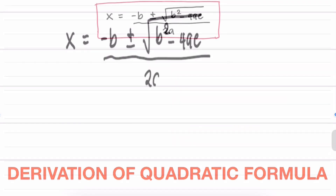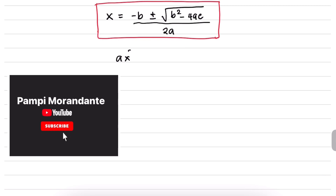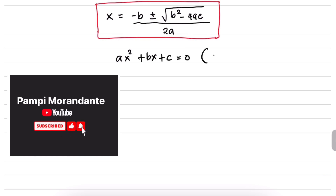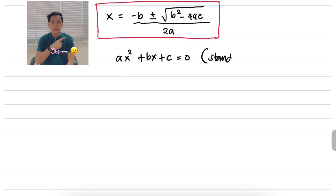Before going further, don't forget to like and subscribe. Here we go. The standard form of a quadratic equation is ax squared plus bx plus c is equal to zero.